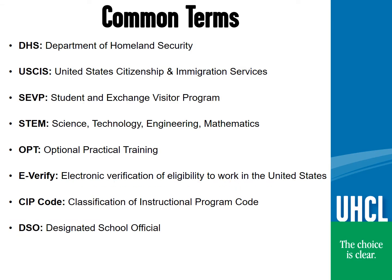Please take a moment to review these common terms that we will be mentioning throughout the presentation. DHS is the Department of Homeland Security. DHS oversees all government agencies related to international students and the security of the United States. USCIS, or United States Citizenship and Immigration Services, approves and or denies all OPT STEM applications, as well as other benefit applications. SEVP is the Student and Exchange Visitor Program of which SEVIS is the reporting function. This is where your international student advisor tells SEVIS what you are doing, such as your employment information and physical living address.